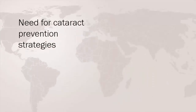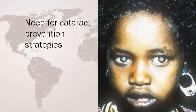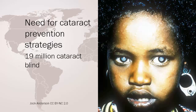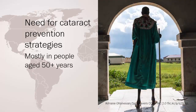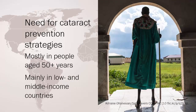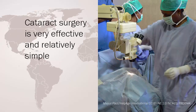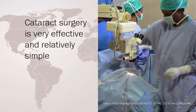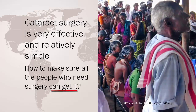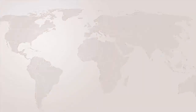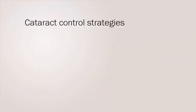The need for cataract prevention strategies is huge. Globally there are more than 19 million blind and over 81 million visually impaired people from cataract. Most of this is found amongst people aged 50 years and over, living mainly in low and middle income countries. The solution is straightforward: cataract surgery is very effective and relatively simple. The challenge is how to make sure all the people who need surgery can get it.